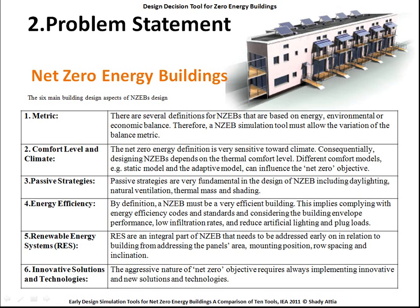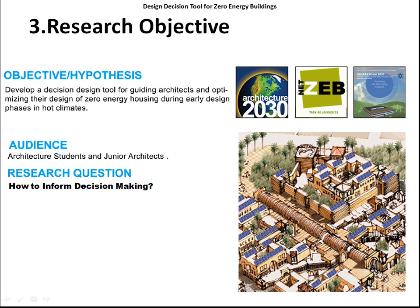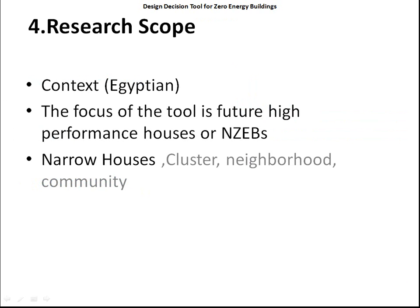These are six main criteria for any tool. Based on that, I developed my objective to develop a decision tool, and the context of this tool will be in Egypt, targeting architects, architecture students, and junior architects. Our main objective is how to inform the decision-making. The tool will focus on high-performance commercial energy buildings. The focus, till this publication, was the narrow house, and now I made it a bit broader.